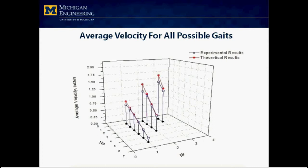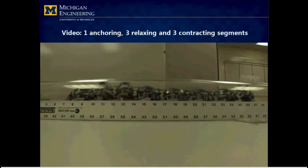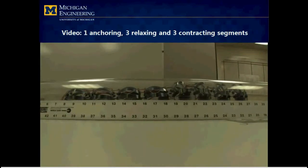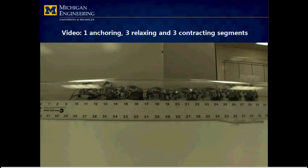Second, we use two gates to illustrate the backward slippage of the anchoring segments. Here is how the robots move. When only one is anchoring, three segments are contracting, and three segments are relaxing.